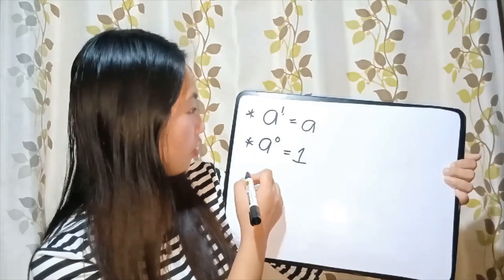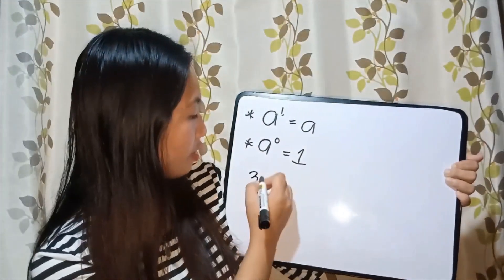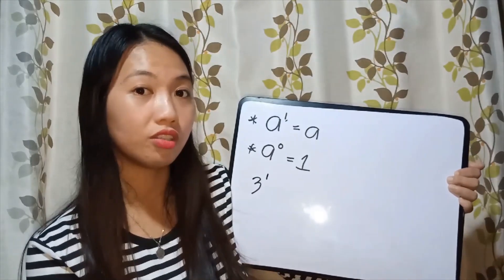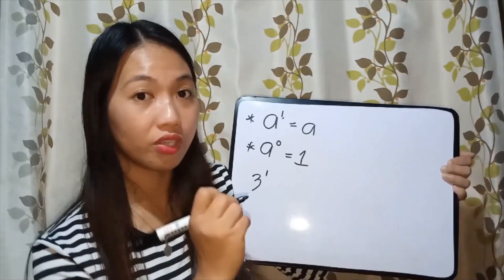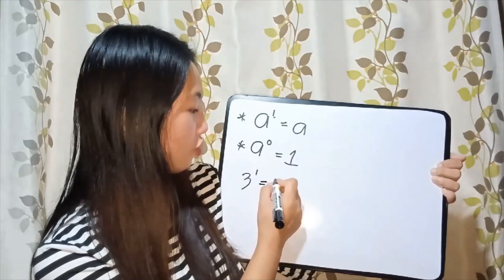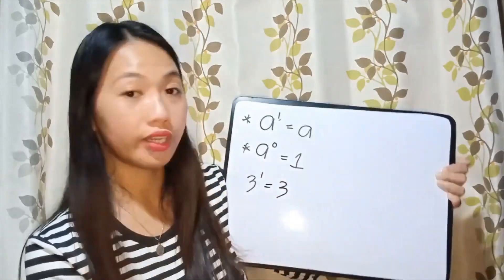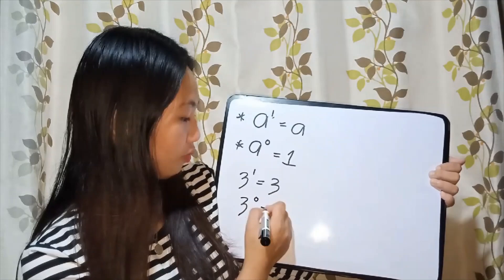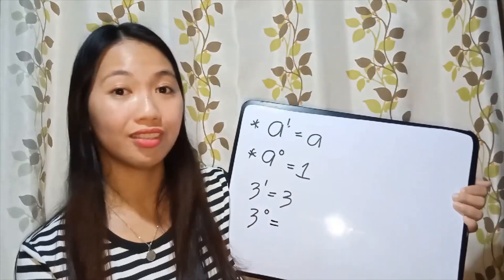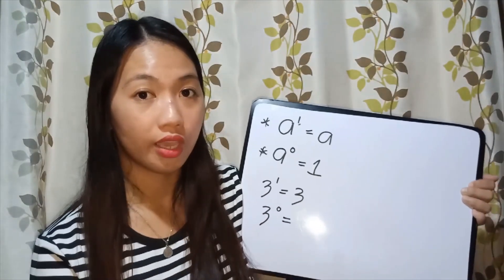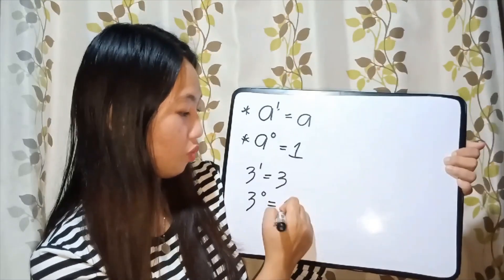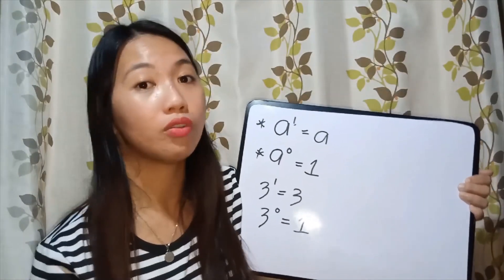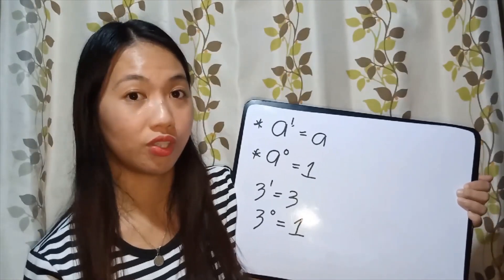There is no need to prove these, but you need to remember them. For example, 3 raised to 1 — anything raised to the first power is the number itself, so the answer is 3. And 3 raised to 0 — anything raised to the 0 power is constant 1. This is how the laws of exponents work.